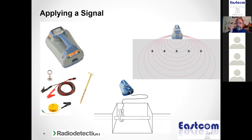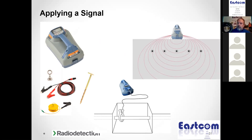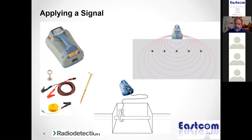We have three ways to put a signal on a utility. The direct connect method uses our red and black leads — the red lead connects to the utility, the black lead to a ground spike. We have an induction clamp, which we clamp around a conduit carrying wires and cables. And we have the induction method, where we set the transmitter on the ground and use its built-in antenna to induce signal through the earth and couple it onto the pipe or cable.